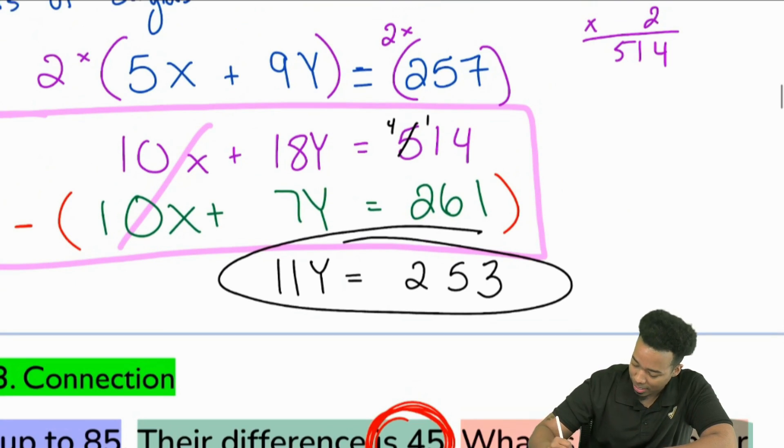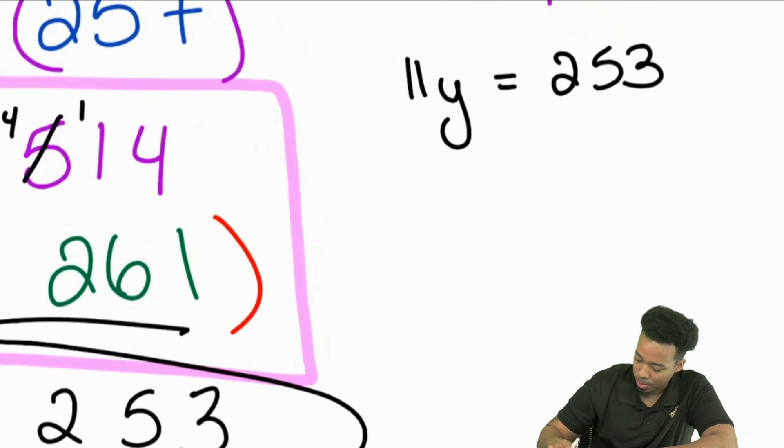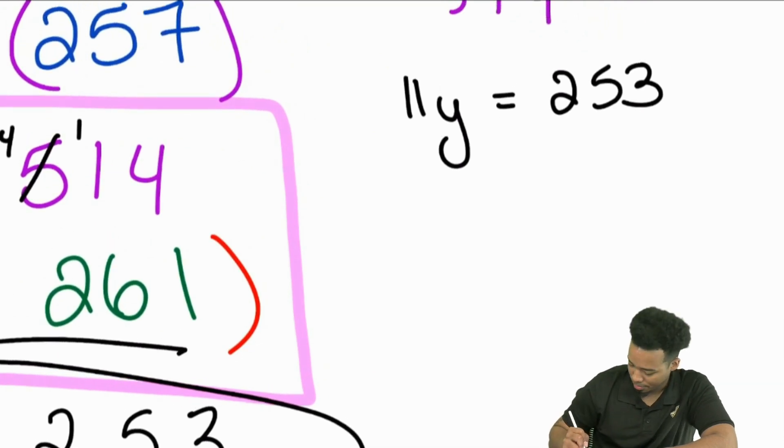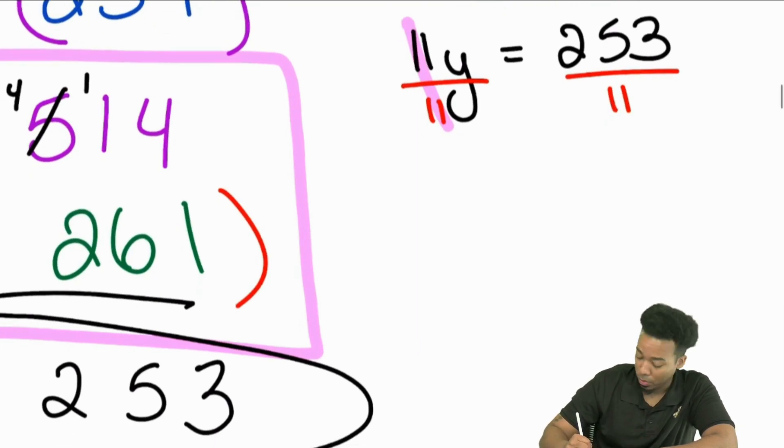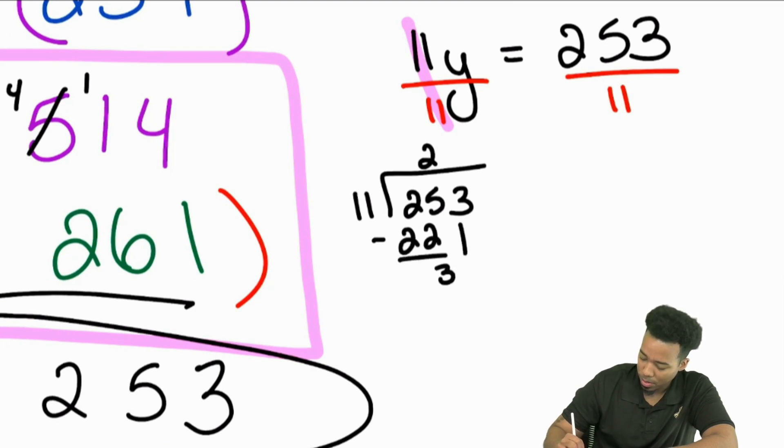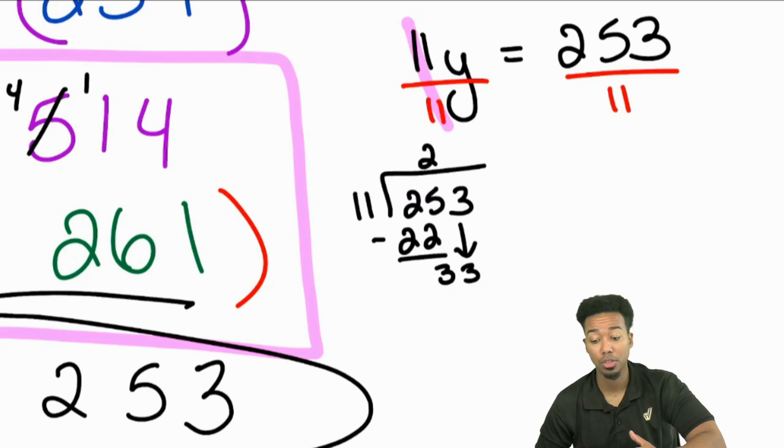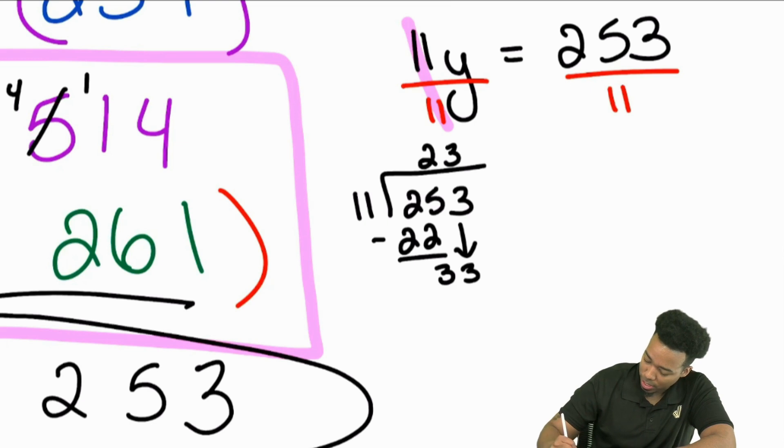Now we need to divide both sides by 11. So we have 11Y equals 253. When we divide both sides by 11, we can do long division if you'd like to. Right over there, 11 goes into 25 two times. And then you have 33. Everybody, 11 goes into 33 how many times? Three times. So we end up getting Y equals 23.